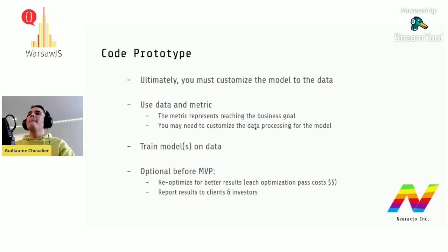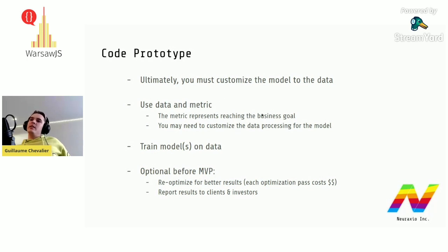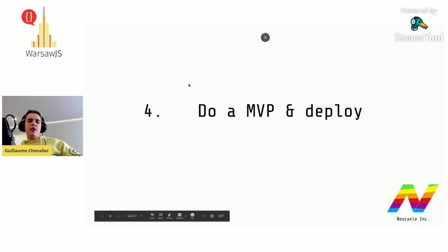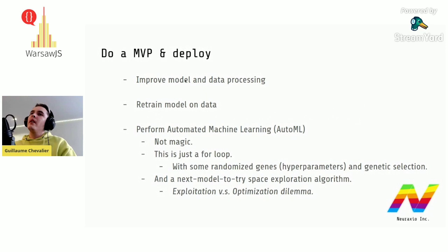When coding a prototype, you must customize the model to the data — not adapt the data to a model or shop for one. You use the data and the metric (the business goal) and may customize data preprocessing for the model. You train models on the data, and before the MVP you might re-optimize and generate reports to show clients and investors. The MVP is an improvement to either the model or the data preprocessing, based on the methodology.